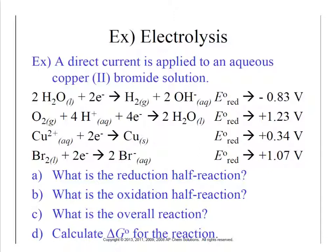Let's do another practice problem. We're going to apply a direct current — an electrolysis problem — to an aqueous copper(II) bromide solution. If it's aqueous, the species present are Cu²⁺, Br⁻, and water. Those are our three players; we need to figure out who's going to be oxidized and who's going to be reduced, choosing between those three.